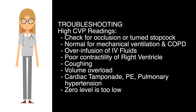Troubleshooting high CVP readings: Check for occlusion or a turned stopcock. High readings are normal for mechanical ventilation and COPD. Other causes include overinfusion of IV fluids, poor right ventricular contractility, coughing, volume overload, cardiac tamponade, pulmonary embolism, pulmonary hypertension, or a zero level set too low.